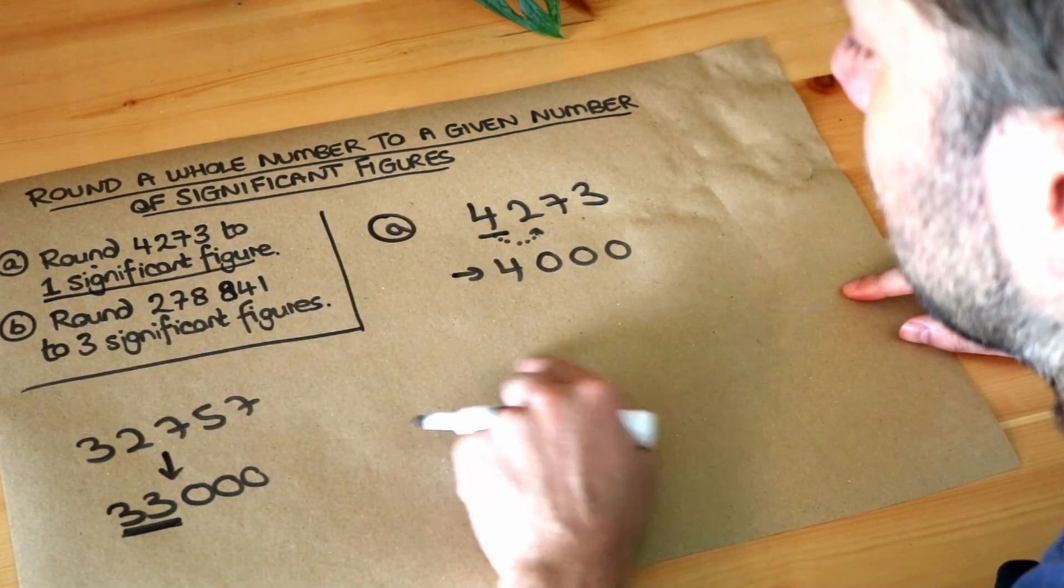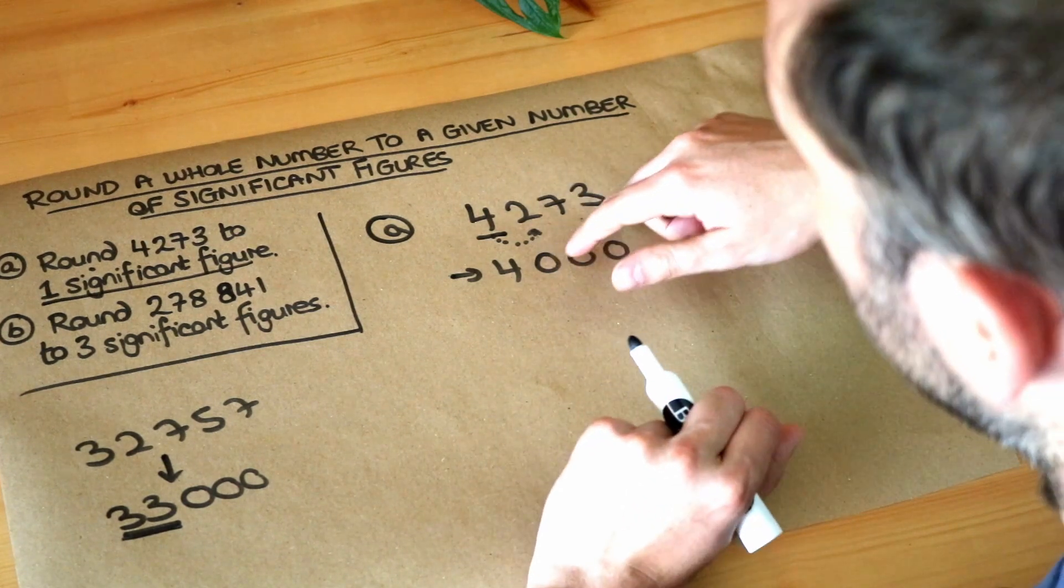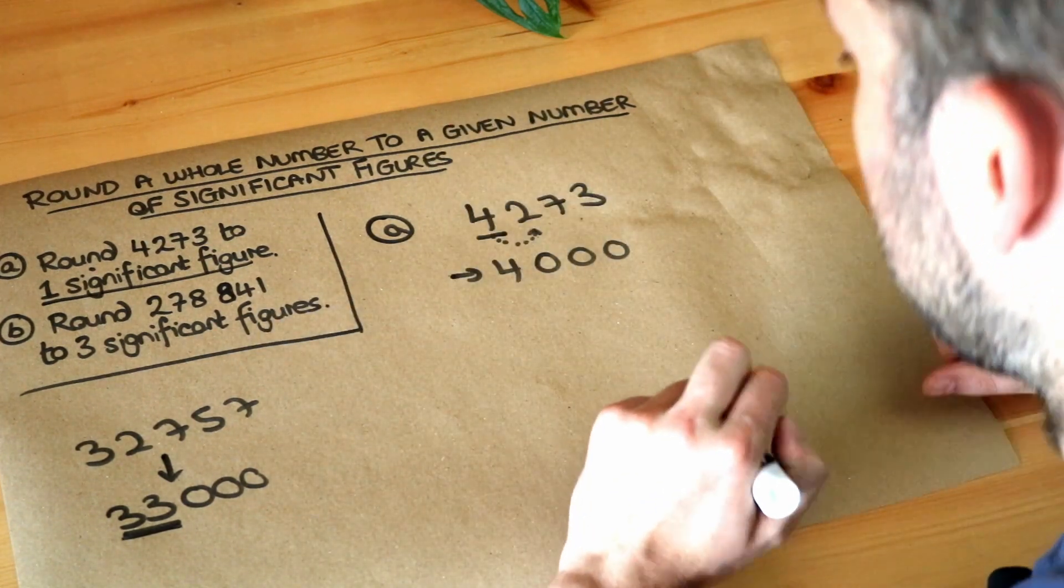So in this particular case when we rounded to one significant figure we happen to round to the nearest thousand, but that depends on the size of the number.